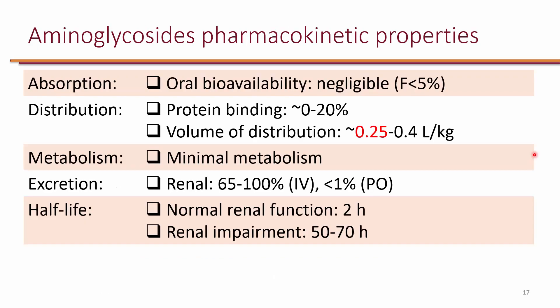The bioavailability of aminoglycosides is negligible — less than 5% is absorbed. Therefore, the majority of aminoglycosides are IV formulations. Oral formulations are typically not available because not enough is absorbed for systemic infection. When oral aminoglycosides are used, it's primarily for GI purposes since they are not absorbed systemically.